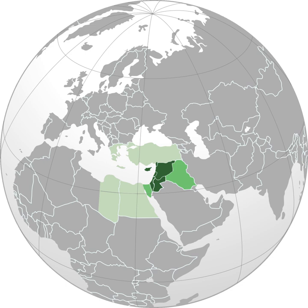The largest religious group in the Levant are the Muslims and the largest cultural linguistic group are Arabs, due to the Muslim conquest of the Levant in the 7th century and subsequent Arabization of the region. Other large ethnic groups in the Levant include Jews, Kurds, Turkmen, Assyrians and Armenians. The majority of Muslim Levantines are Sunni, Alawi, or Shia Muslim. There are also Jews, Christians, Yazidi Kurds, Druze, and other smaller sects.